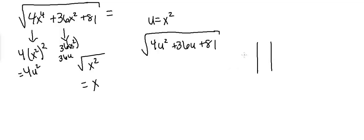One of them I know is, I believe is called the tic-tac-toe method. So you put the a term here, which is 4. You put the c term here, which is 81. And then you put a times c in this box, and that's going to give you 324.